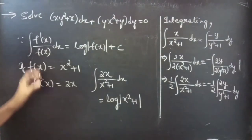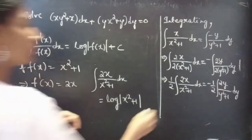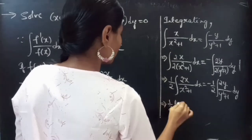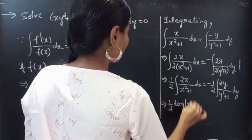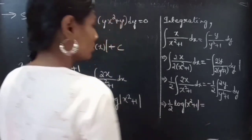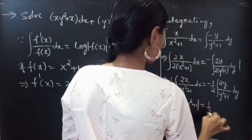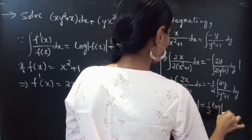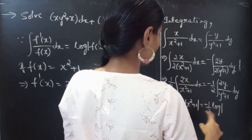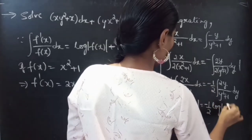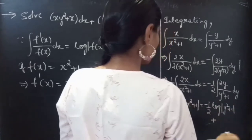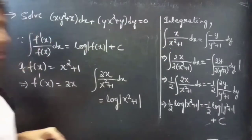Now we can apply the formula directly. We get (1/2) log|x² + 1| = −(1/2) log|y² + 1| + c.